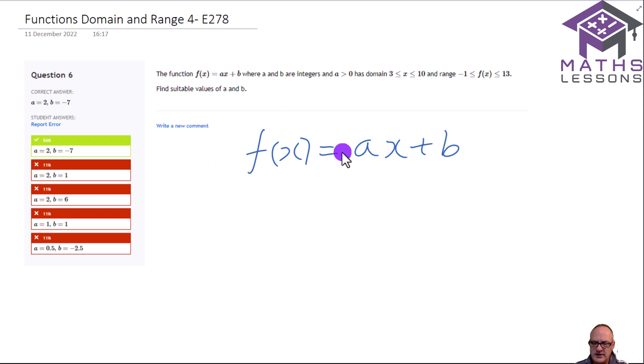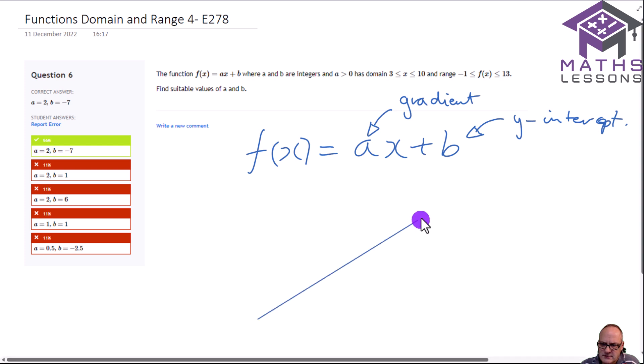Remember, you've probably seen it as y equals mx plus c. So a is the gradient and b is the y-intercept. If we know that a is the gradient and a is greater than 0, we know that it's going from low to high. So let's just draw in a nice little straight line for that. We've got ourselves a straight line going upwards of gradient a, and we know that the domain is from 3 to 10.